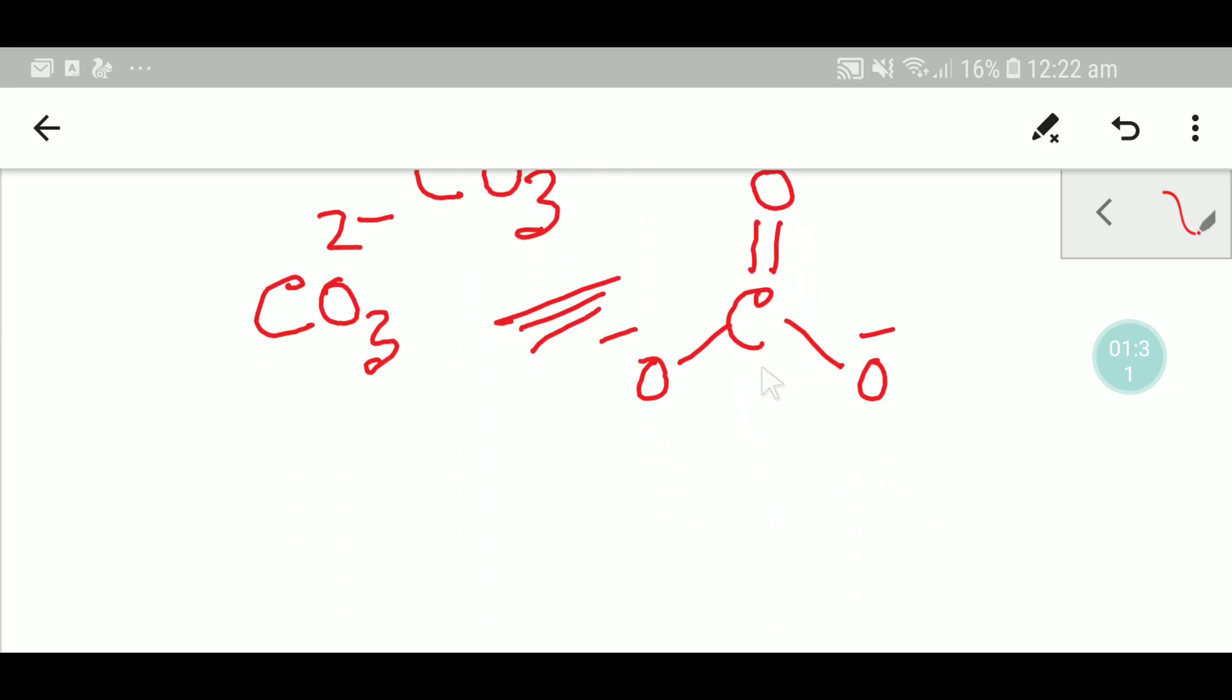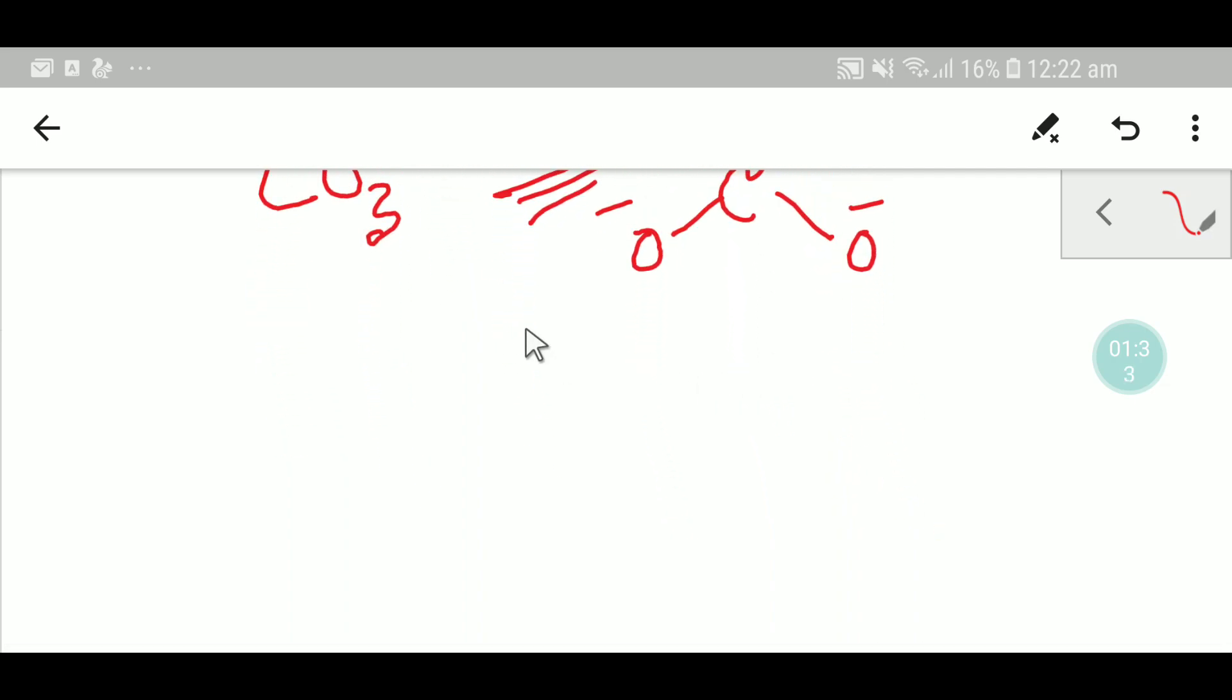Let me give you some example. Let me write the structure of ferric carbonate. Ferric carbonate means iron 3 carbonate. This is the ferric carbonate.